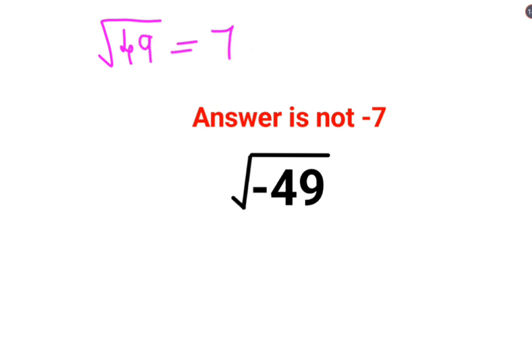So root of 49 is 7 and a lot of people thought that okay root 49 minus, minus 49 can be written as root of 49 into root of minus 1. So your root of minus 1 is minus and root of 49 is 7.